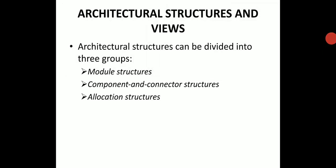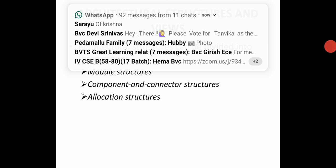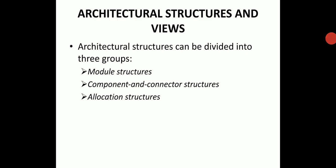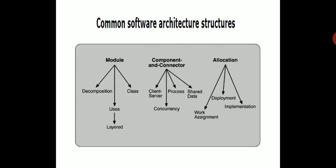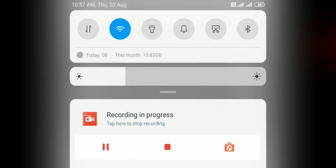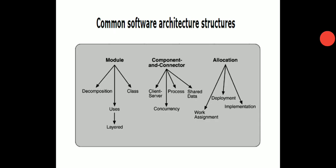These are the three different software structures in the architecture. Now, what are the common software architecture structures? Here we are specifying under module what are the common software architecture structures, under component and connector what are the software structures, and under allocation what are the software structures. Let us see in detail.